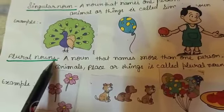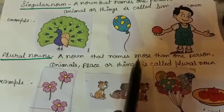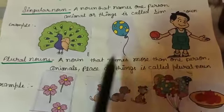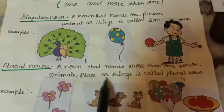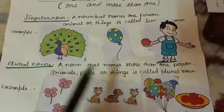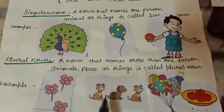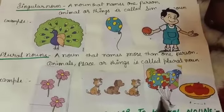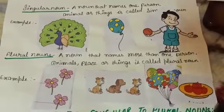Plural Nouns: A noun that names more than one person, animal, place, or thing is called a plural noun. Examples: flowers, three dogs, more balloons, four apples.